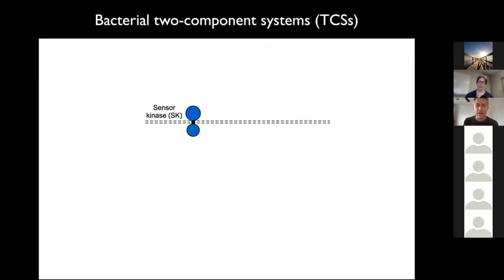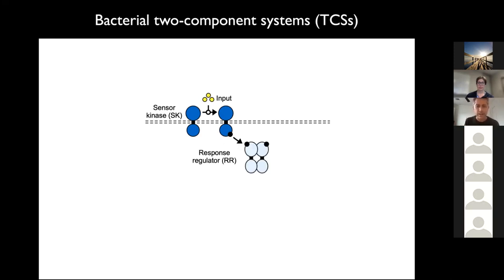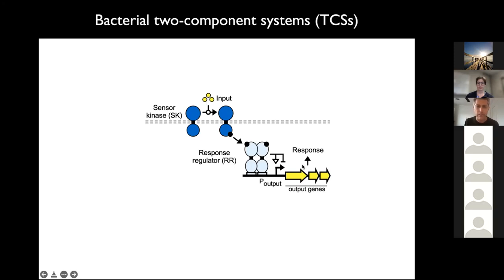My lab has focused on a particular family of sensors: bacterial two-component systems. These pathways typically have a transmembrane sensor kinase protein with an extracellular sensor domain and an intracellular kinase domain. In the presence of a ligand, the sensor domain changes conformation, causing the kinase domain to phosphorylate itself, then transfer that phosphoryl group to an intracellular response regulator. When phosphorylated, the response regulator binds DNA, activating or repressing transcription — allowing bacteria to sense the environment and respond by changing gene expression.